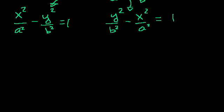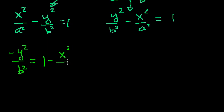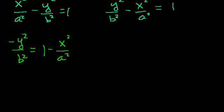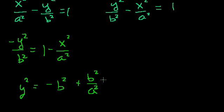These are both hyperbolas, and what I like to do is solve for y. In this case, I subtract x squared over a squared from both sides and get minus y squared over b squared equals 1 minus x squared over a squared. Then I multiply both sides by minus b squared — the minus and b squared go away on the left — and I'm left with y squared equals minus b squared, and then minus b squared times that becomes plus b squared over a squared times x squared.